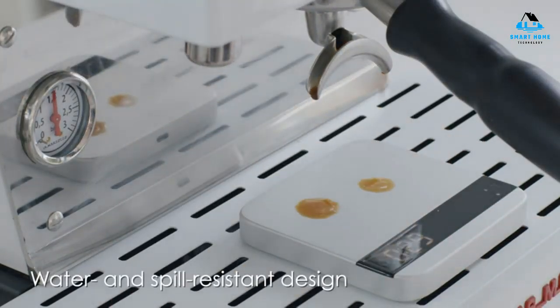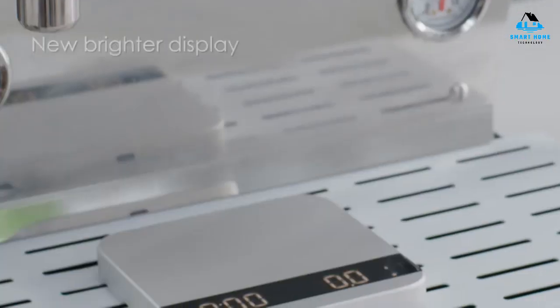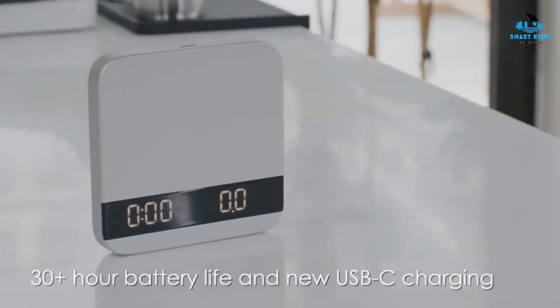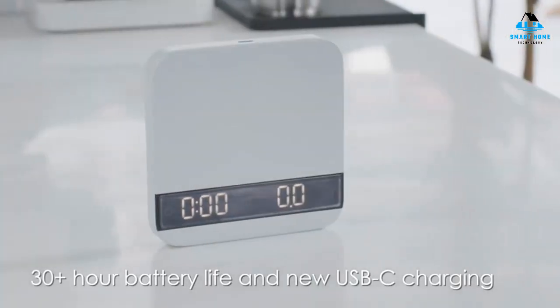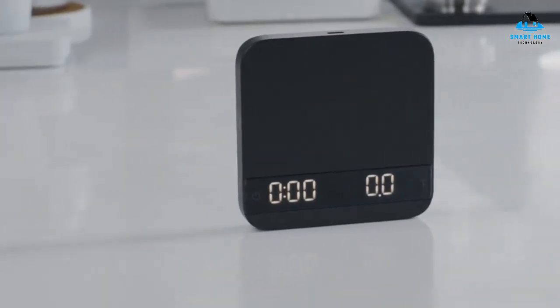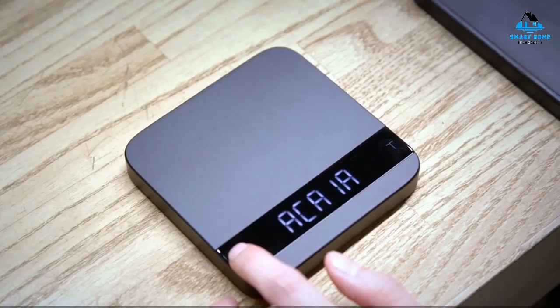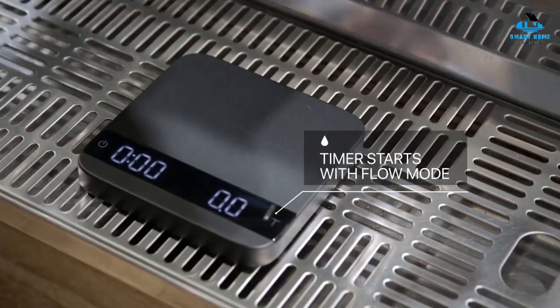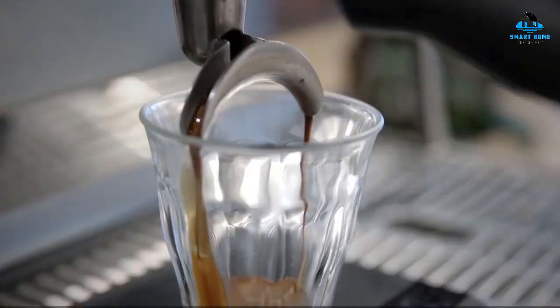It comes with Bluetooth connectivity too, similar to the Acaia Pearl, allowing you to connect it to the brand's app to access coffee recipes, load your brew data, and more. This scale also comes with a heat-proof silicone pad and features a hydrophobic ceramic coating, making it easy to keep clean. It's also incredibly durable, built to withstand steam, espresso, and water.